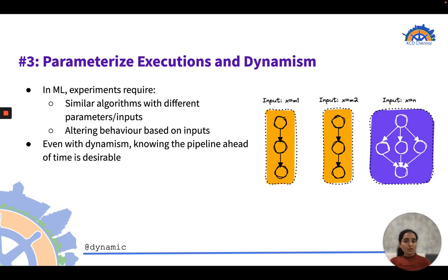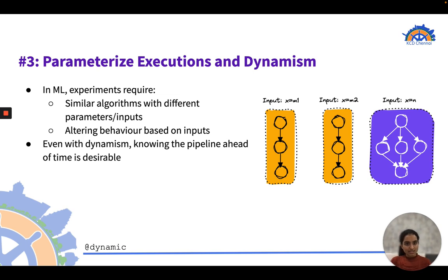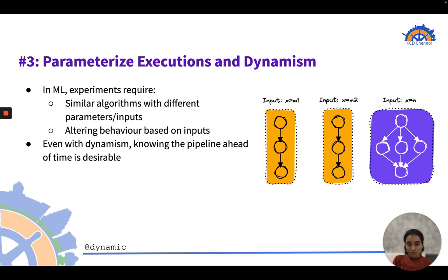In ML, experiments require similar algorithms with different parameters or inputs, which can lead to altering behavior based on inputs. Flight handles this with the dynamic decorator. For example, with input M1 or M2 the dependency graph may be the same, but for input N the graph is totally different — an additional node with a different dependency structure. This dynamism is addressed using Flight's dynamic decorator.